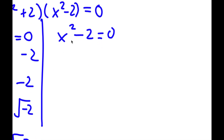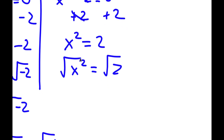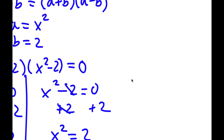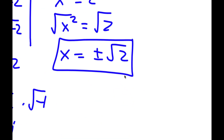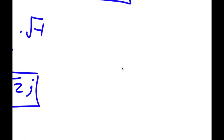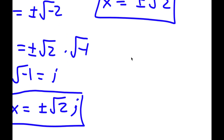For x squared minus 2 equals 0, I'm going to add 2 on both sides. These two cancel out and I get x squared is equal to 2. Taking the square root on both sides, x equals plus or minus the square root of 2. So those are four solutions to this problem.